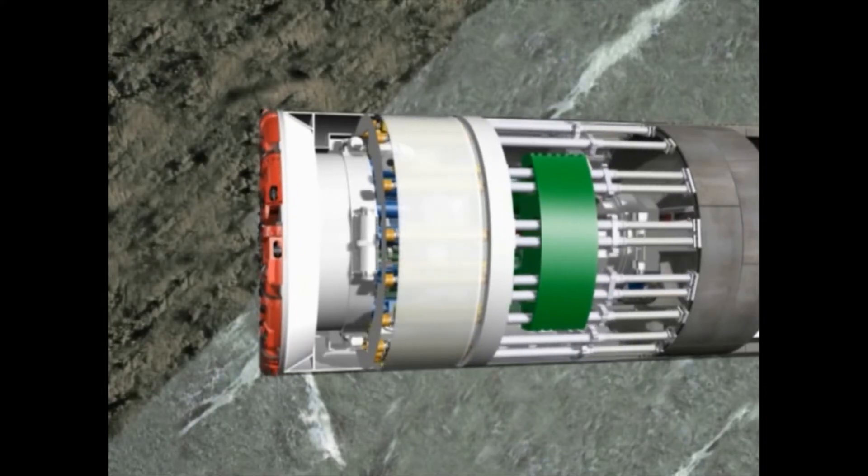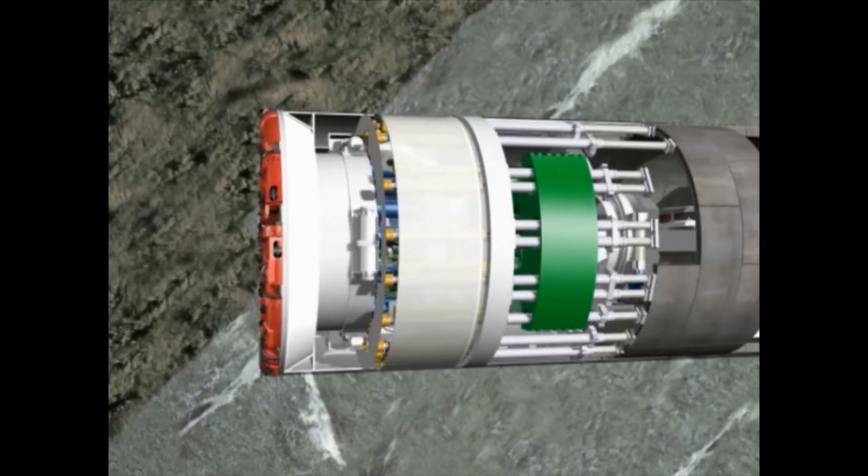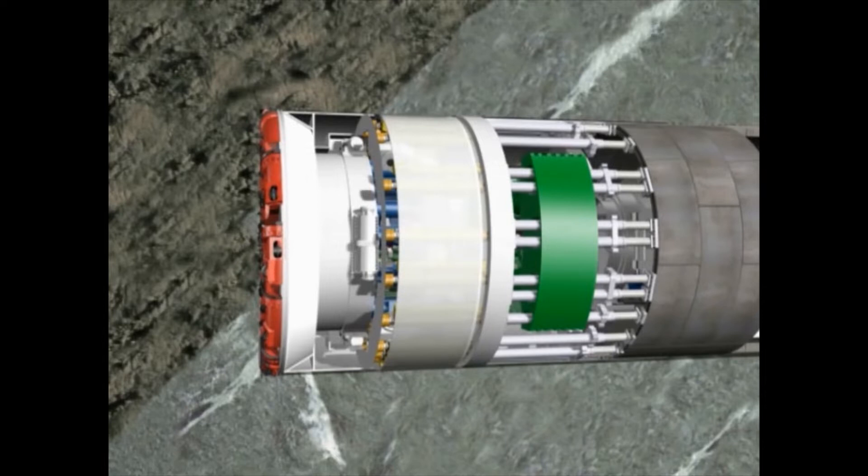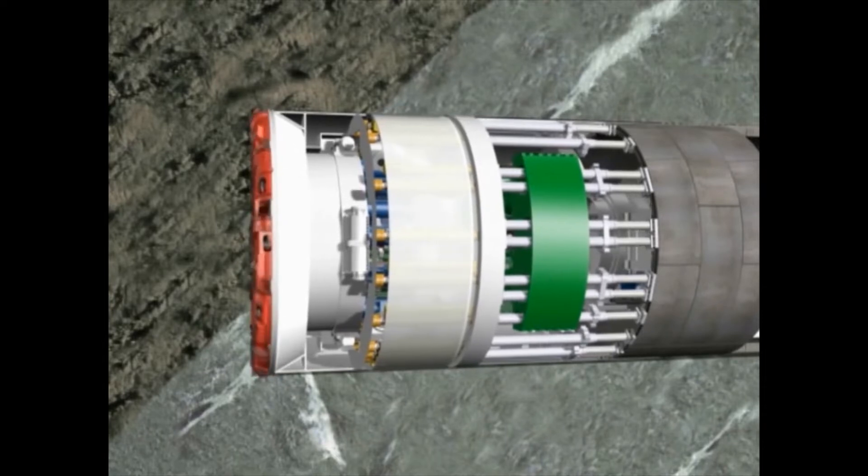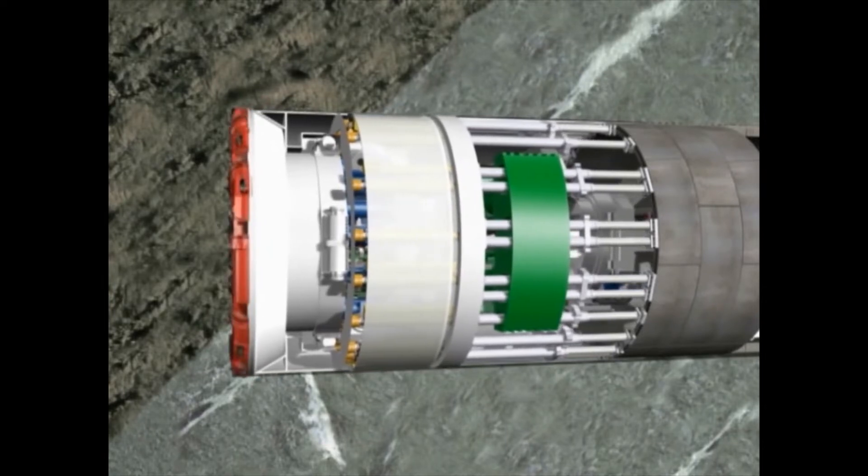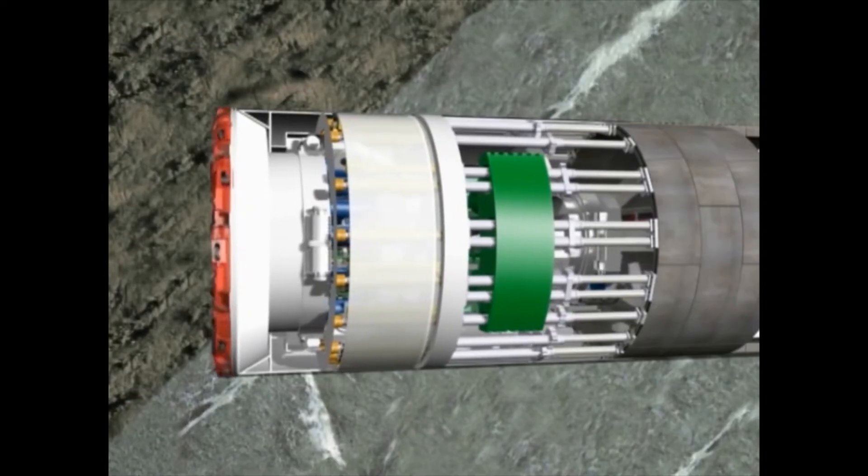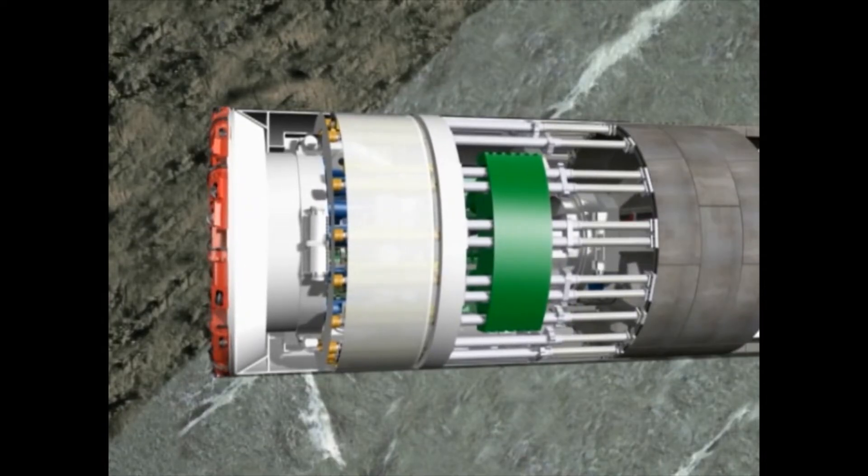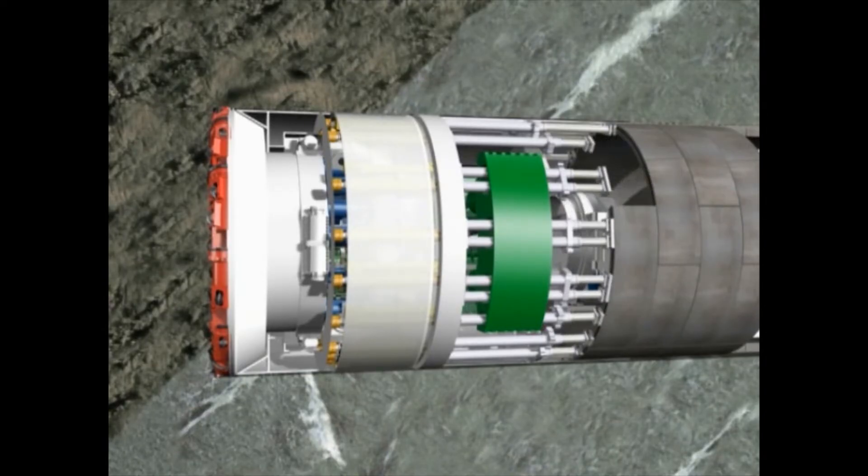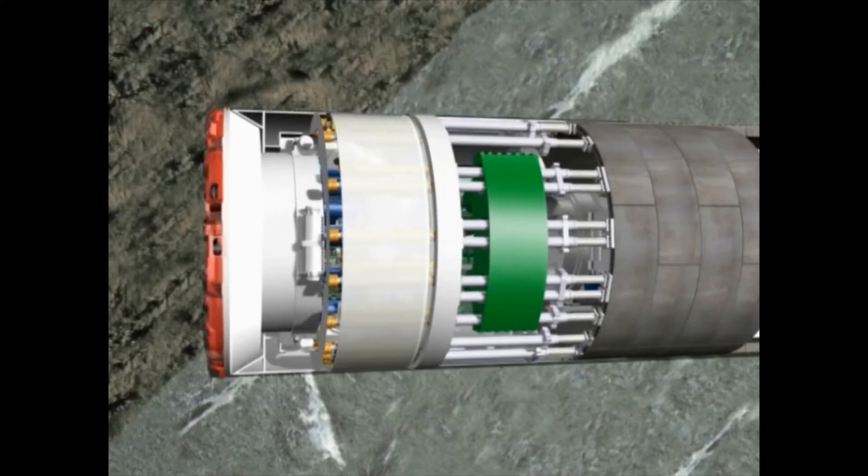If the double shield encounters a section with fault zones, the telescopic front shield is retracted. The entire boring machine is pushed forward only by the auxiliary thrust cylinders, which are pushing against the tunnel lining. This kind of excavation is called discontinuous, since, as with a conventional shield, thrust with cylinders is only possible after complete installation of a segment ring.